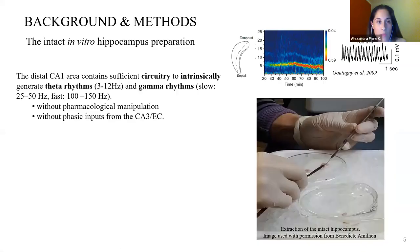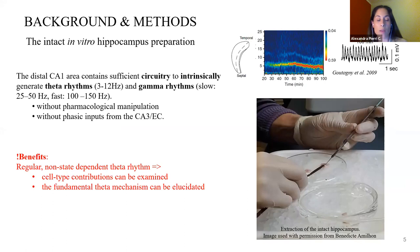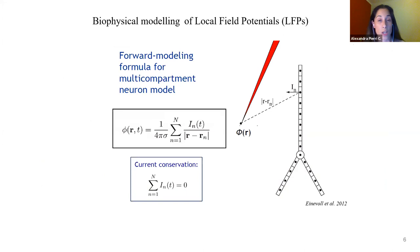The physiological context that I use for my modeling work is that of an intact in vitro hippocampus preparation that autonomously generates theta rhythms without external inputs from CA3 or the entorhinal cortex. This same area also produces gamma rhythms, which are coupled to theta. This preparation presents a number of benefits, as theta rhythms in vivo are very state-dependent and very regular, making it very hard to decipher cell-type contributions to those rhythms.